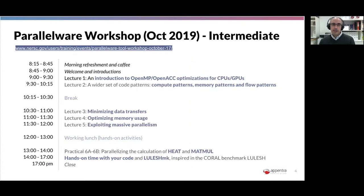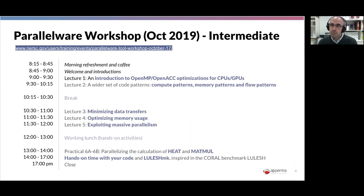In October, we also presented an intermediate level course. In this case, we focused on different aspects — not on running a loop in parallel, but on key features that need to be optimized to increase the performance of code running on CPU and on GPUs. Essentially we focused on minimizing data transfers, which is the number one challenge when coding for GPUs, and on optimizing memory usage, because exploiting data locality can make a big difference in terms of performance.